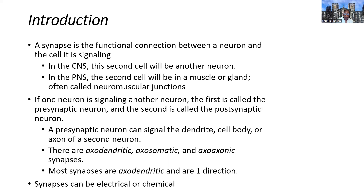Axodendritic synapses are the most common or most abundant type of synapse in the nervous system. Synaptic transmission is usually one-directional, from the presynaptic neuron to the postsynaptic neuron in most cases. Synapses can be electrical or chemical — in an electrical synapse we have a bidirectional type of movement, but in the majority of synapses throughout the body those are usually chemical synapses, which have a unidirectional signal. Chemical is much more abundant and we're going to spend more time focusing on the details of the chemical synapse.